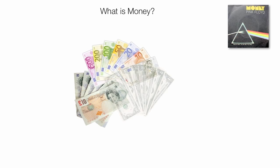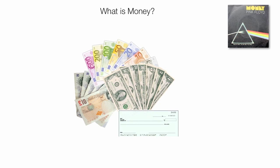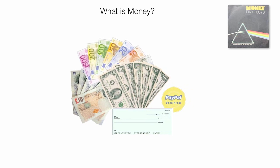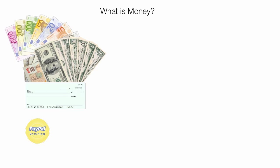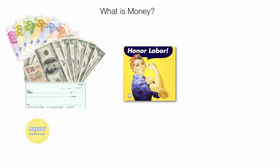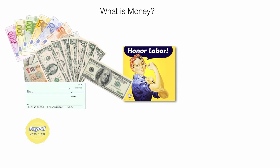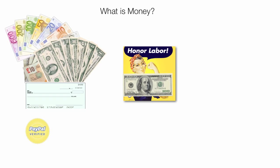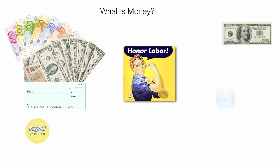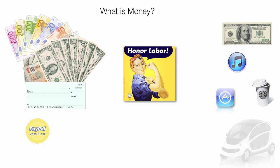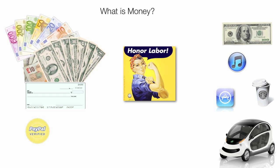It doesn't matter if it's pounds or euros or dollars or money you have in a checking account or PayPal — we accumulate money to buy things, now or later. We exchange labor for money, and we take this money, either in the form of cash or check, and we buy things with it: apps, iTunes, Starbucks, even a little car. You buy and accumulate things with this money.